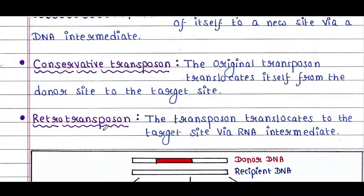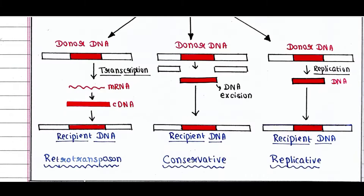Next is retrotransposons. The retrotransposon translocates to the target site via an RNA intermediate. Here, the donor DNA gets transcribed to form mRNA, which then generates cDNA that gets inserted into the recipient DNA — this is retrotransposition.